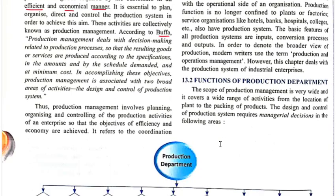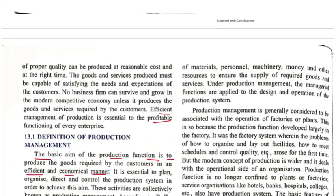Production management involves planning, organizing, and controlling the production activities of an enterprise so that the objectives of efficiency and economy are achieved. It refers to the coordination of material, personnel, machinery, money, and other resources to ensure the supply of required goods and services.